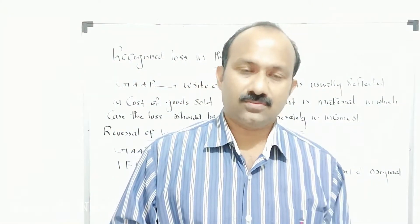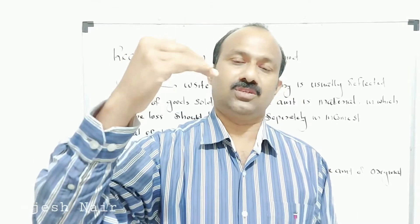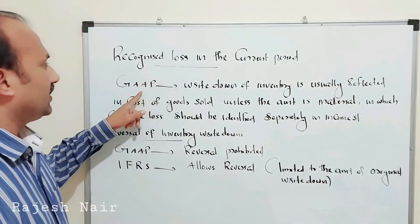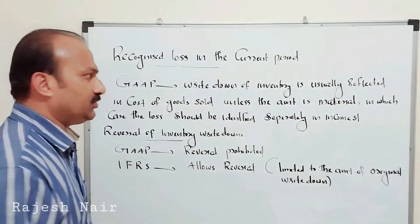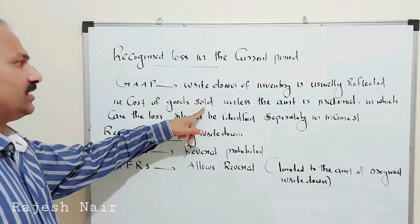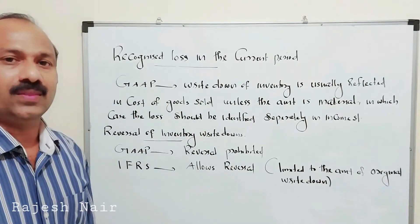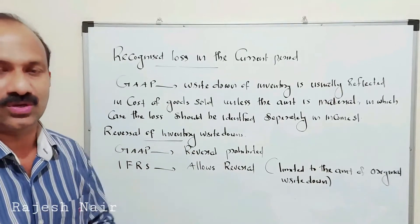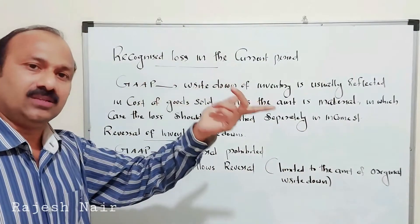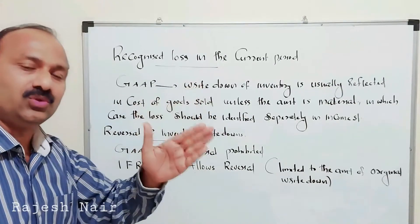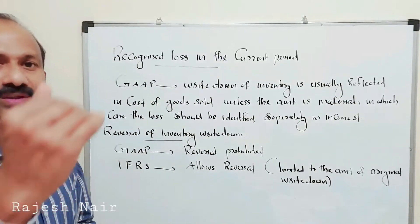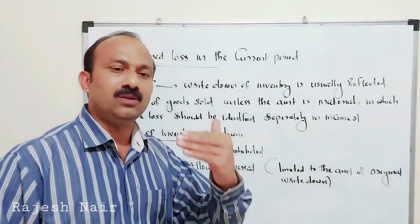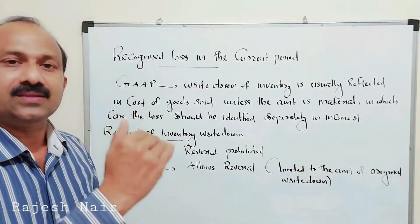Whenever inventory valuation happens, the cost will be reduced from the real value. How will the loss be recognized in the current period? GAAP says that write-down of inventory is usually reflected in the cost of goods sold unless the amount is material. If any write-down is material, it should be adjusted in the cost of goods sold. If the amount is immaterial, we can directly charge it to cost of goods sold. Otherwise, you have to write it off across cost of goods sold, finished goods, and work in progress — and the loss should be identified separately in the income statement.